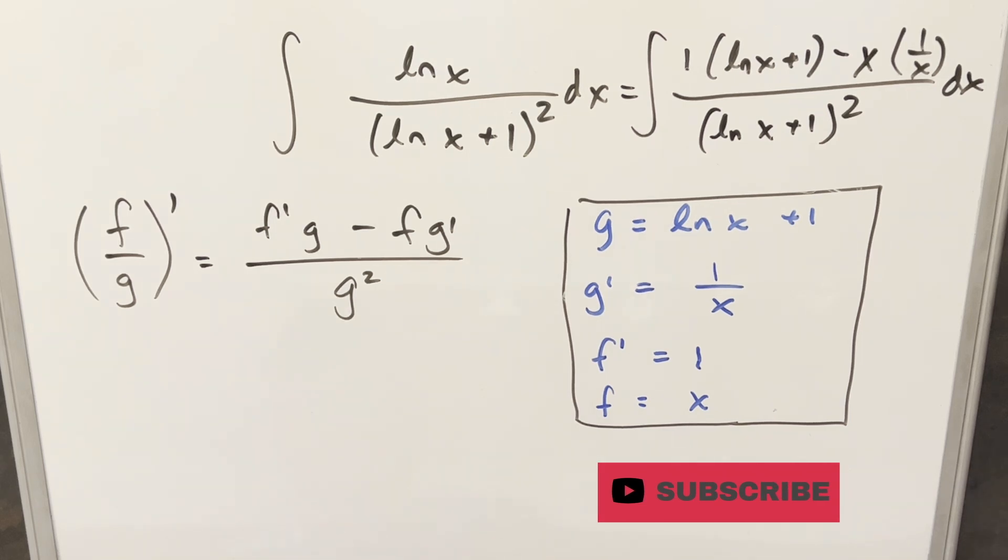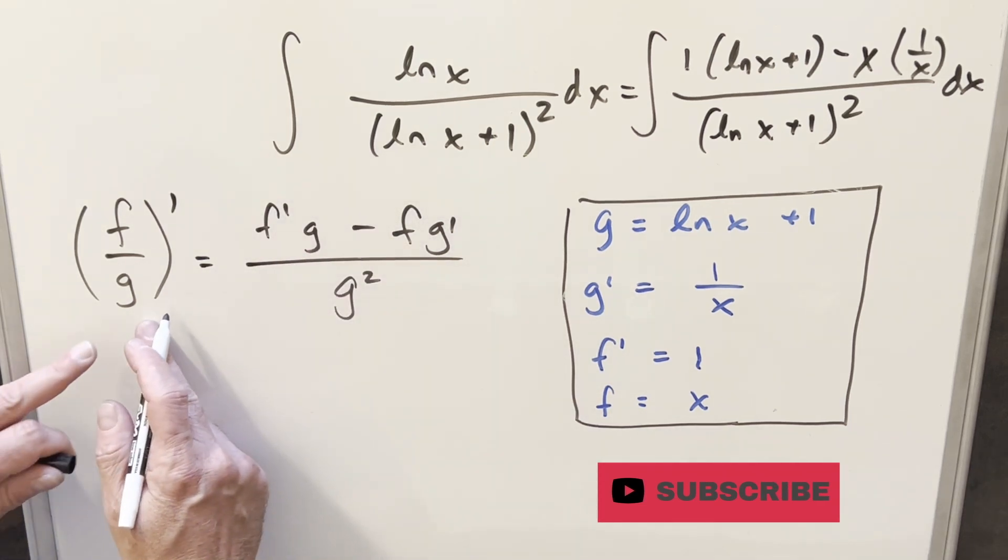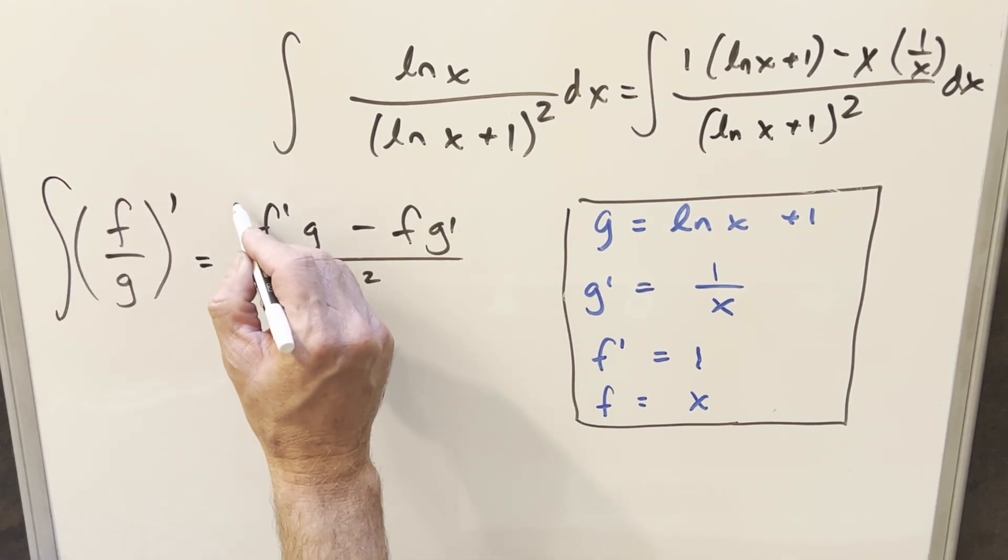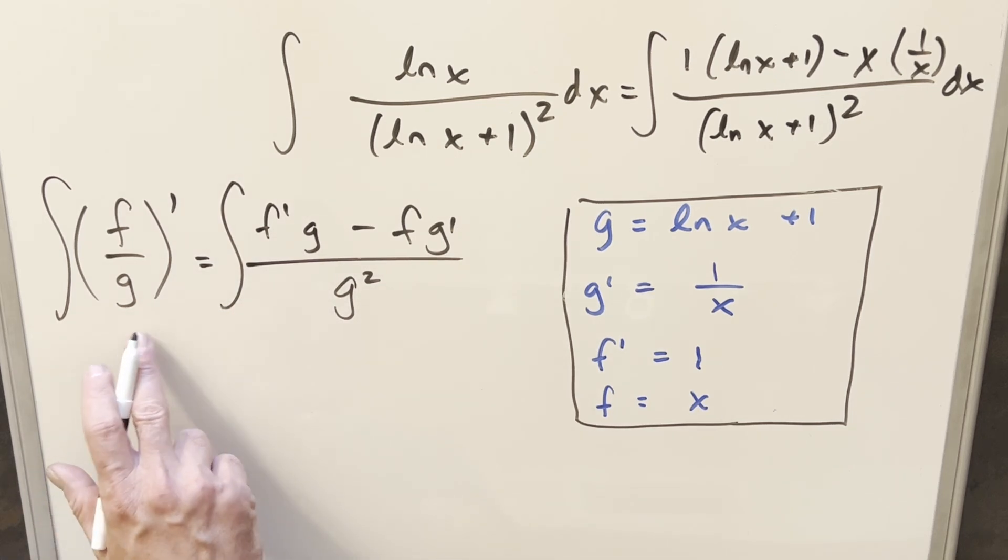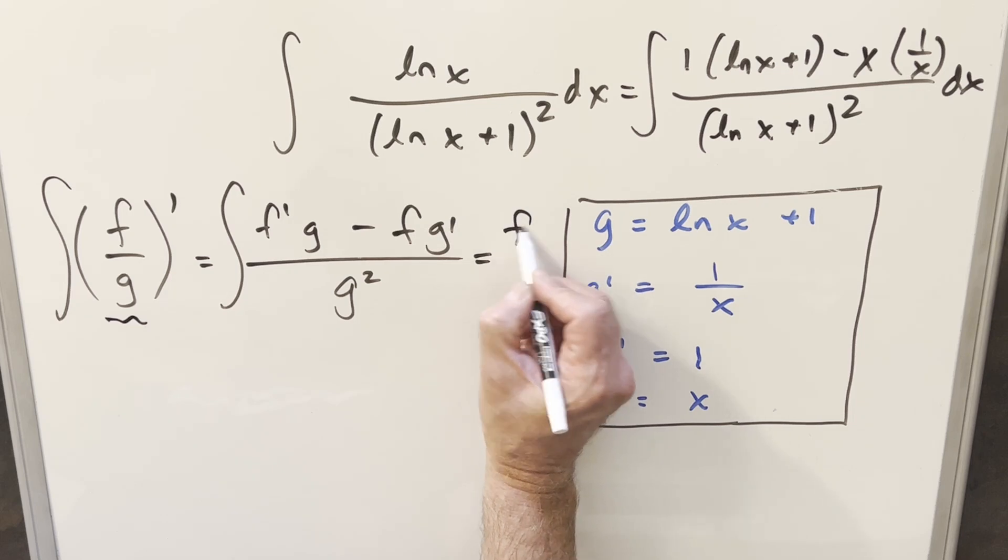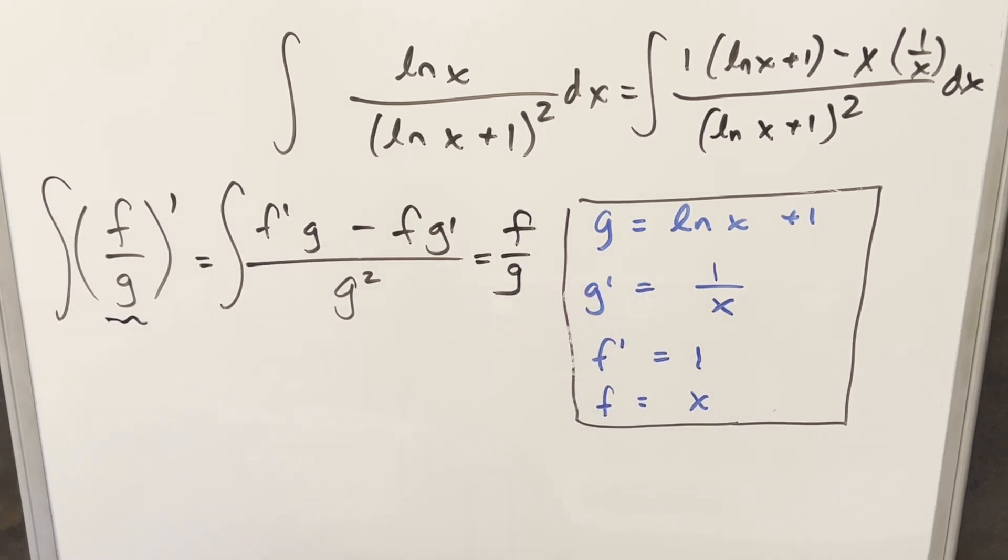Now in order to finish this off, what we're doing here is we have the, sorry, I said product rule, I meant quotient rule here. So in order to finish this off, what we want to do, we have this whole thing, our quotient rule, we have this inside of an integral. But here we're integrating a derivative, so that's just going to give back this part right here. So our solution is just going to be f over g.